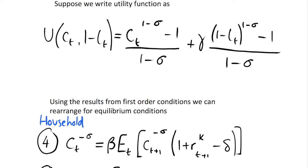In the previous video we solved a Lagrangian where we maximised an individual's utility function and derived the Euler equation and the intratemporal condition. We didn't use a specific utility function, so in this video we're going to come up with some utility functions so that we can get conditions of our variables in terms of other variables and parameters.